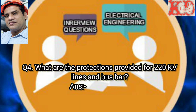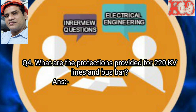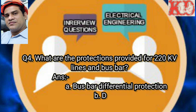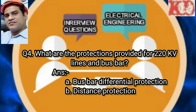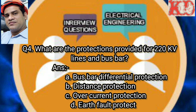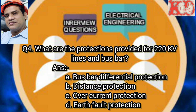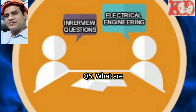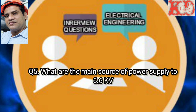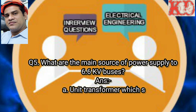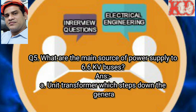Question number 4: What are the protections provided for 220 KV lines and bus bar? Answer: First, bus bar differential protection; second, distance protection; third, overcurrent protection and earth fault protection.